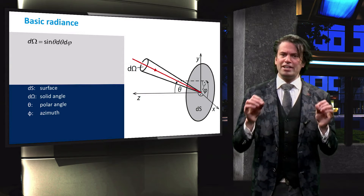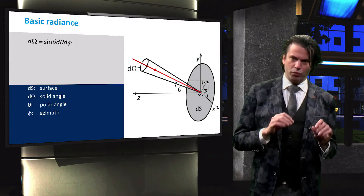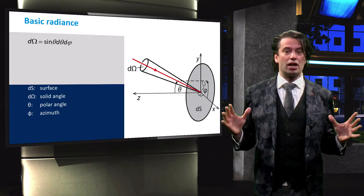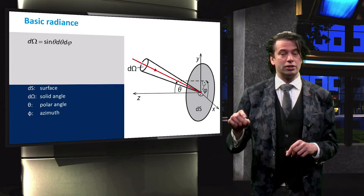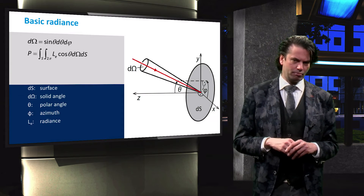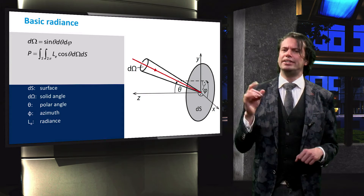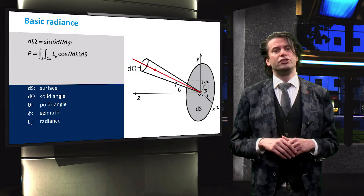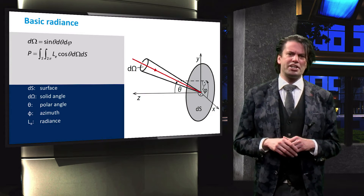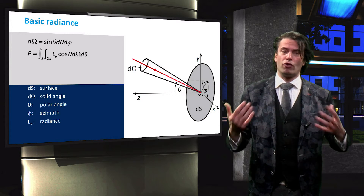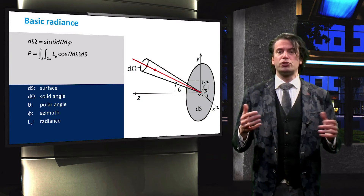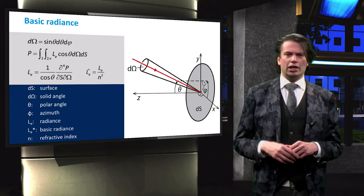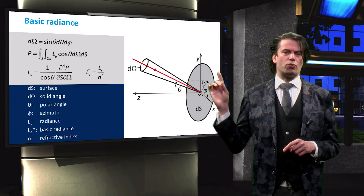To find the total incident power, we also have to integrate over the hemisphere from which the light can be incident on ds. This leads to the following equation. The quantity L_E is called the radiance. The radiance is defined as the radiant flux of power per unit solid angle and per unit projected area, and is described by the corresponding equation.